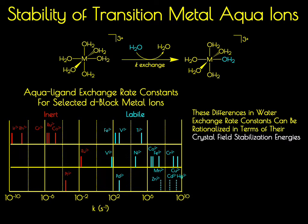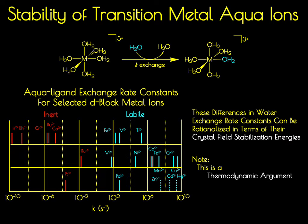We want to get some insight into why transition metal compounds display these widely different rate constants when we look at water exchange, and we're going to use crystal field stabilization energy to rationalize why some compounds are inert and others are labile. Something to point out is that there are a large number of factors that go into why these compounds display different rate constants. The argument we're going to present is just one facet, and it's purely a thermodynamic argument — we're looking at stability of a compound relative to an intermediate species that's going to be generated.